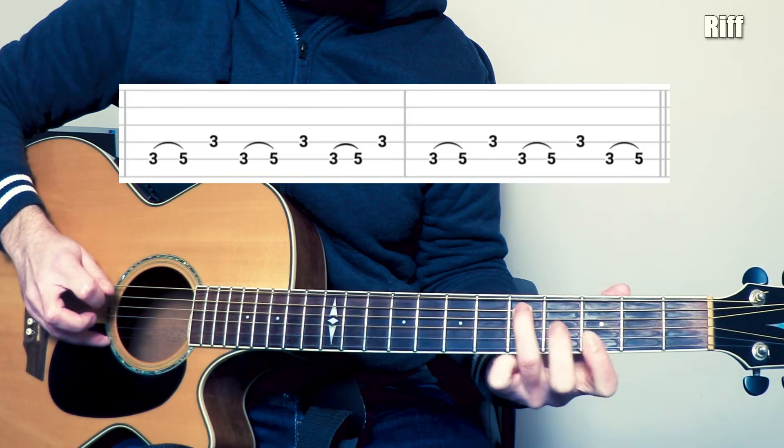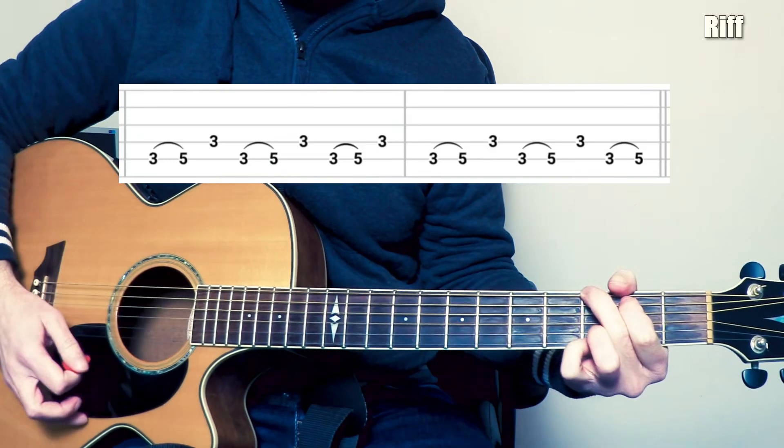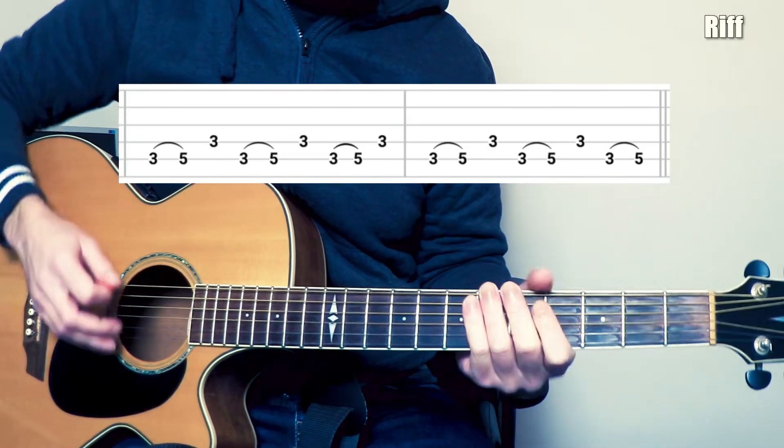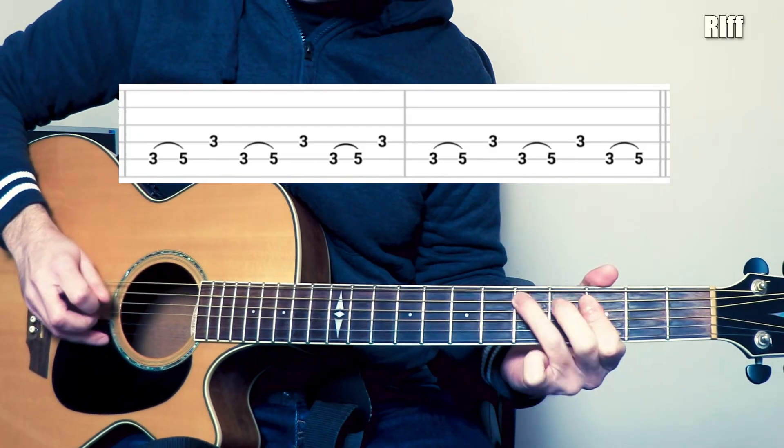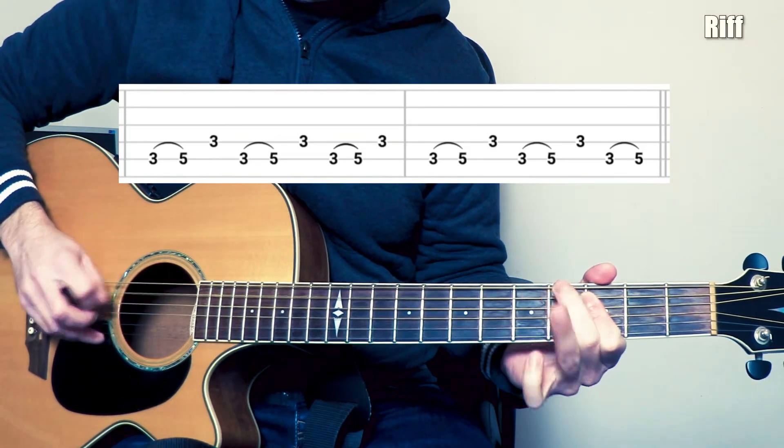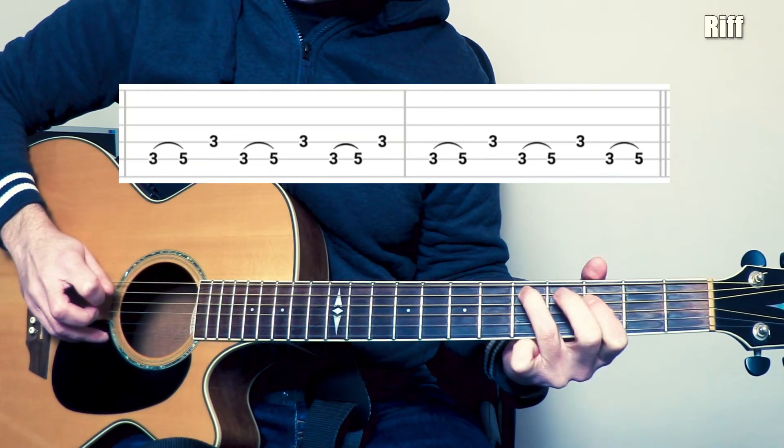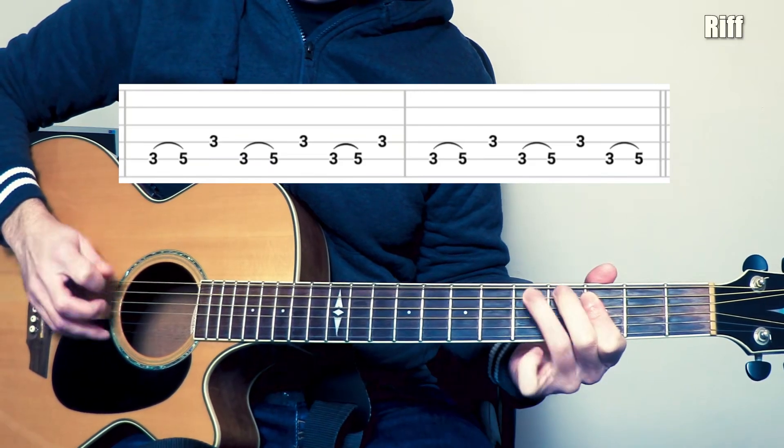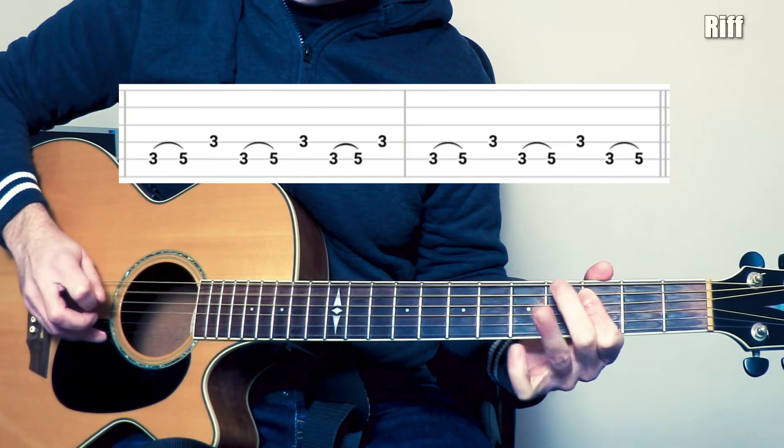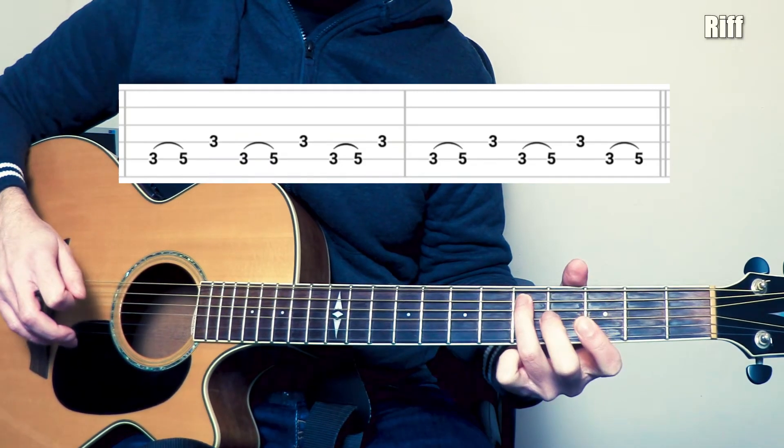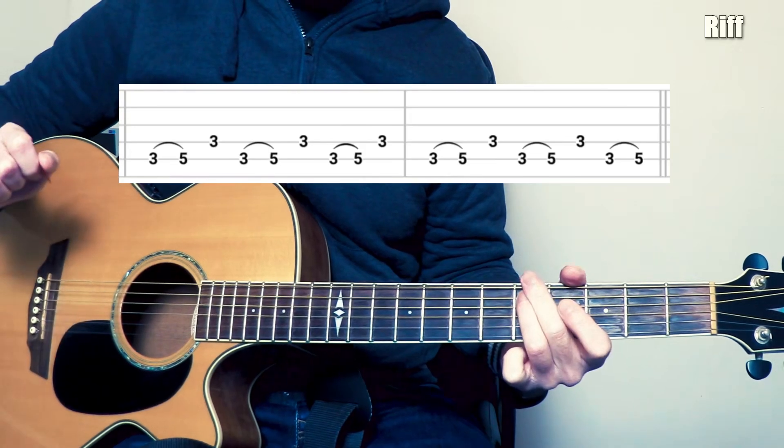Et là, quand on a fini ici, on viendra vite sur le sol du couplet. Donc on ralentit. Deux roches. Donc voilà pour ce petit riff à bosser, c'est pas forcément évident. Et j'attaque sur les couplets.